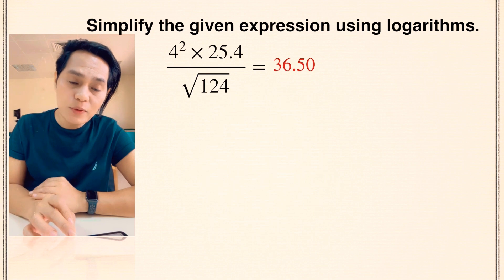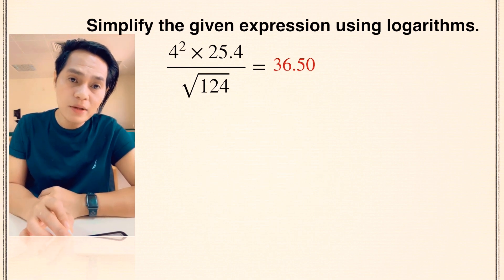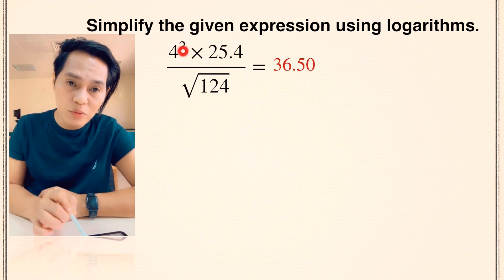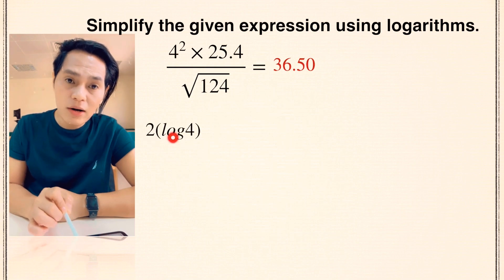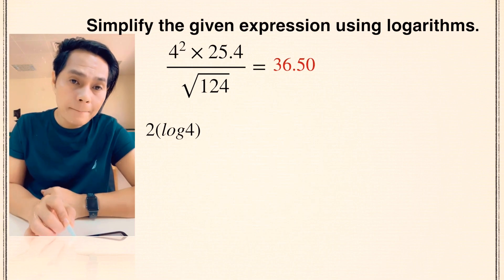First thing is we are going to check the numerator and we have here which is 4 squared. So what we are going to do is just to get the logarithm of the base and whatever is the exponent we are going to multiply it to the logarithm of the base. So this is 2 times the log of 4. Just simply multiply the power to the logarithm of the base.